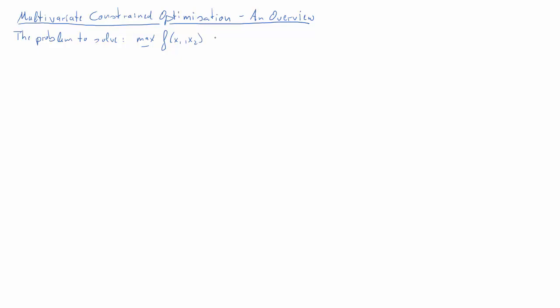The purpose of this clip is to give an overview of the different possible outcomes we can get if we perform a multivariate constraint optimization. We have a function f of x1 and x2 which we want to maximize, subject to a constraint g of x1 and x2 being greater than or equal to zero. When we follow the Lagrange multiplier methodology, we write down the Lagrange function L, which is a function of x1, x2, and lambda, equal to f plus lambda times g.